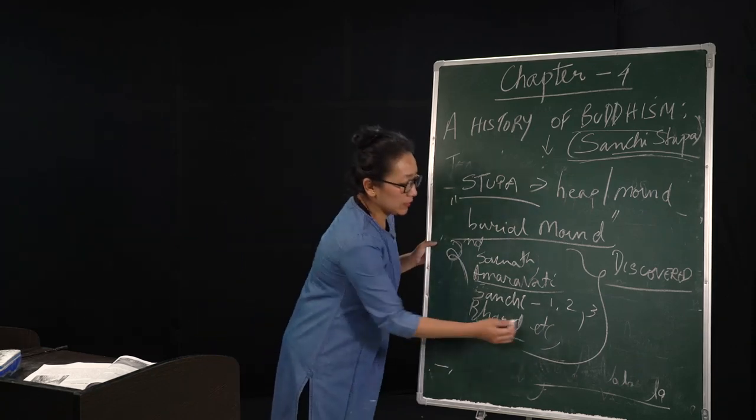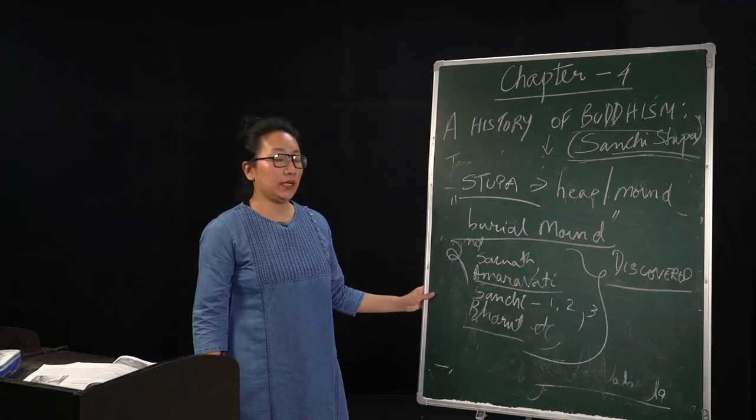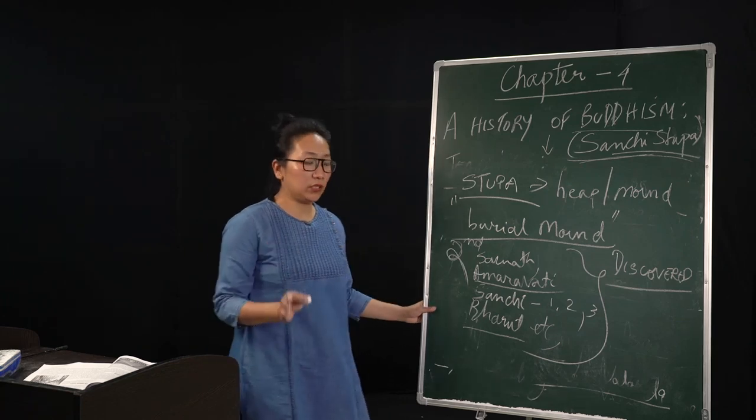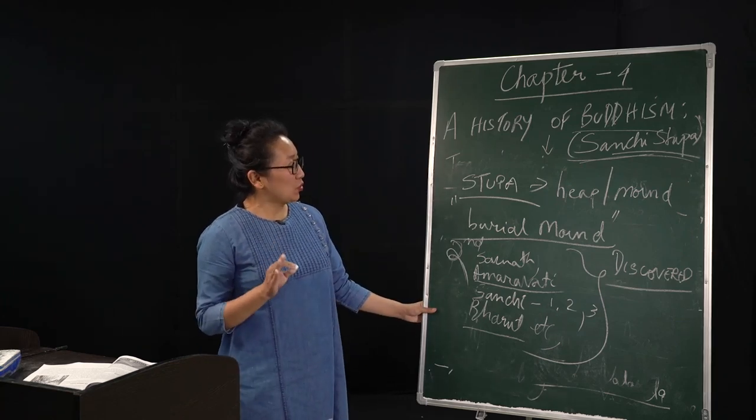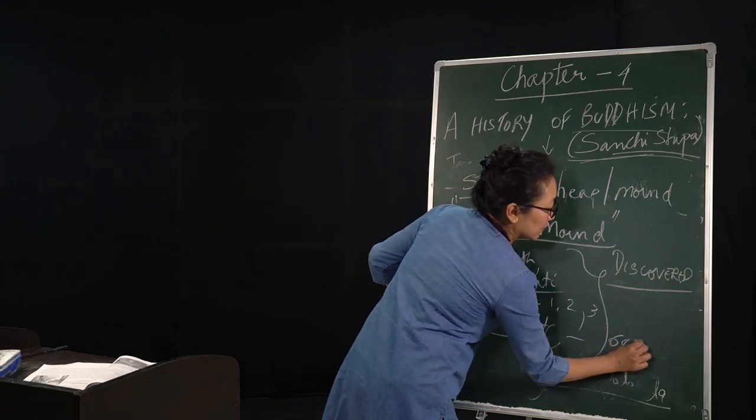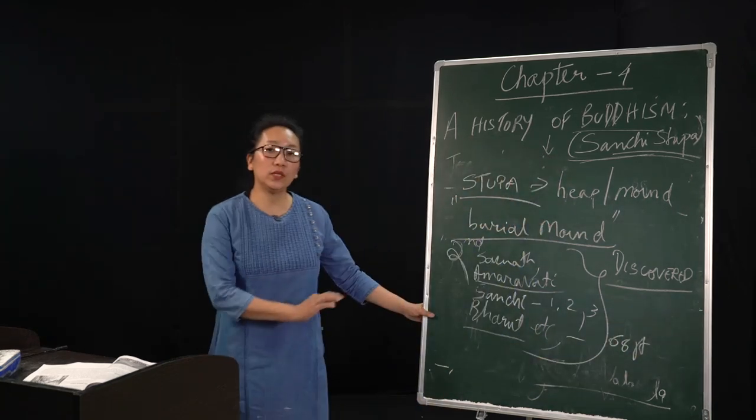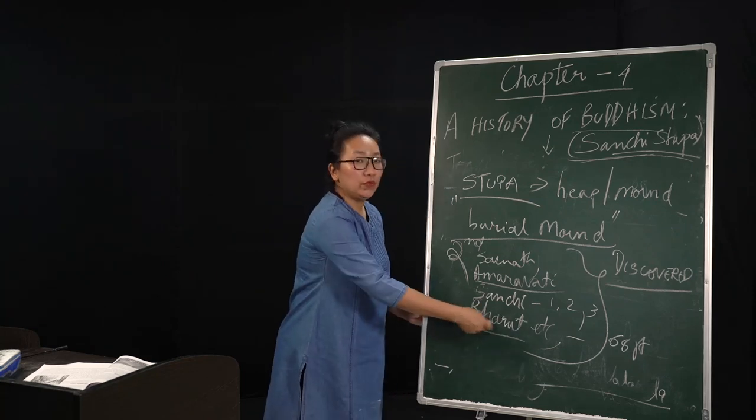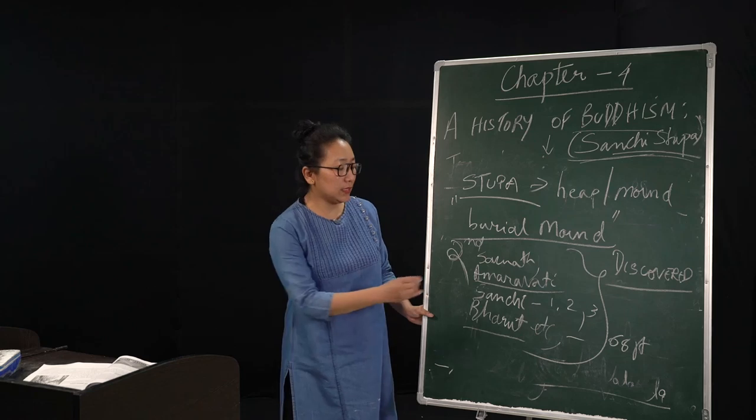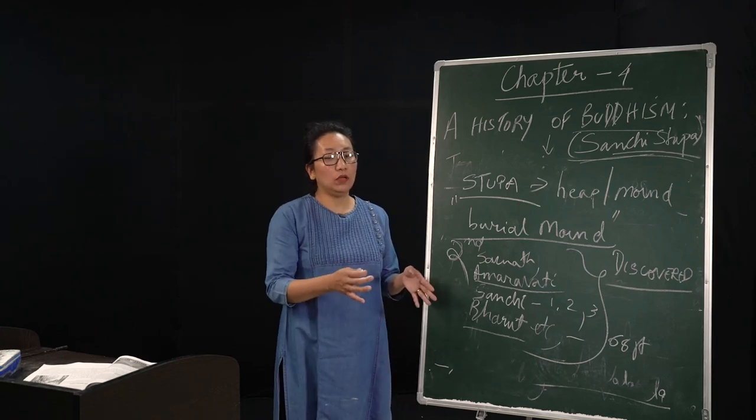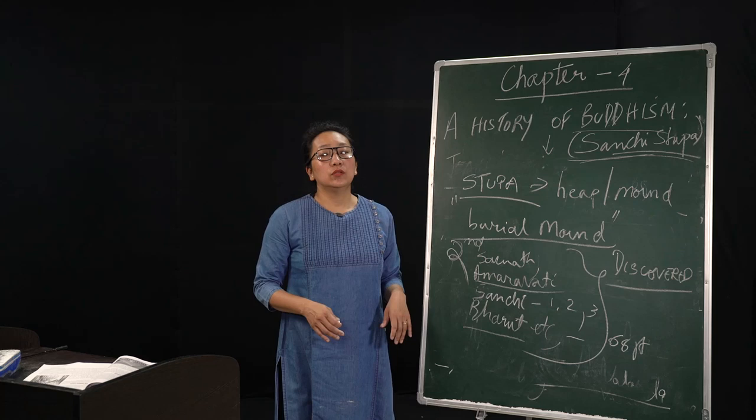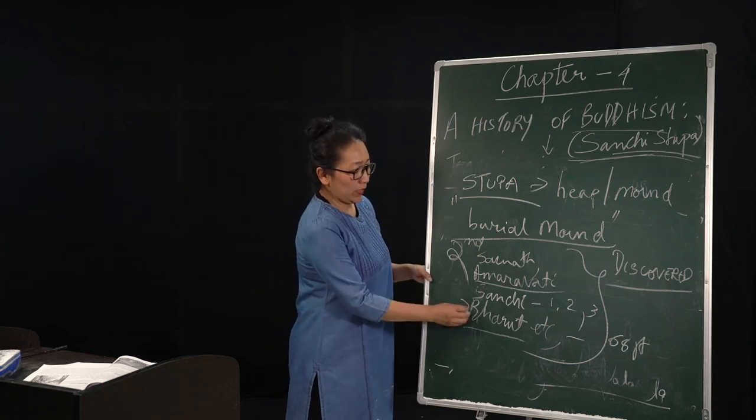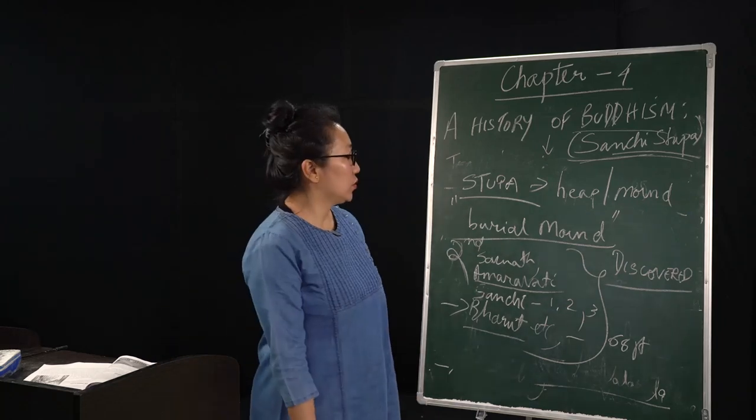The Bharhut stupa was discovered by another British man, Sir Alexander Cunningham, in 1873. The Bharhut stupa, it is said that it was only 68 feet in diameter. And when it was discovered, it was in a very damaged state. So what they did is that they removed most parts of the stupa and this stupa, a model, is now taken to the Indian Museum in Kolkata. So if one wants to look, we have to go to Kolkata to look at the Bharhut stupa.